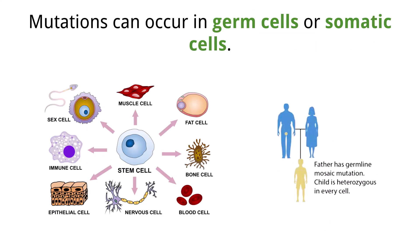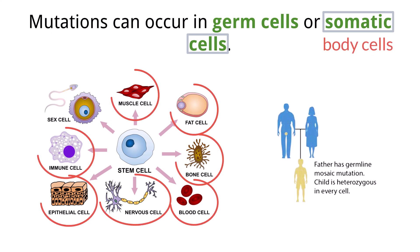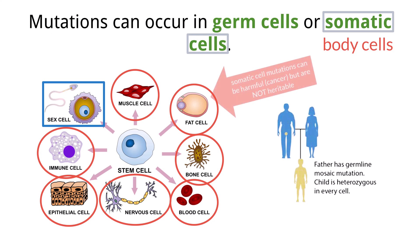Where mutations occur is important for understanding how they will affect the organism and future generations. Somatic cells are body cells — all the cells in your body except those involved in reproduction. These cells form the body's tissues and organs. When mutations occur in somatic cells, they can lead to diseases like cancer, but mutations in somatic cells are not passed on to future generations. They are not heritable.